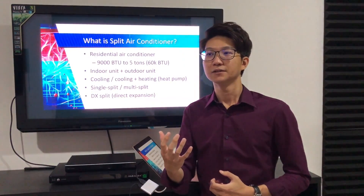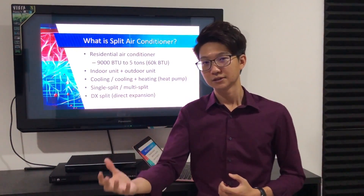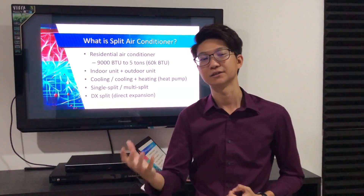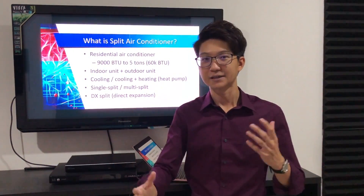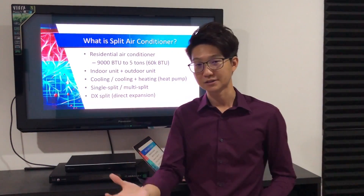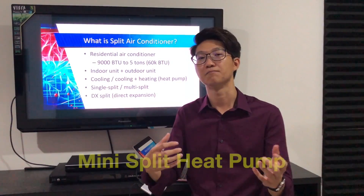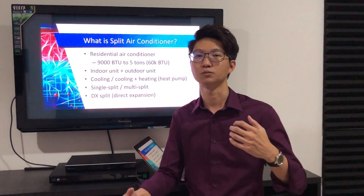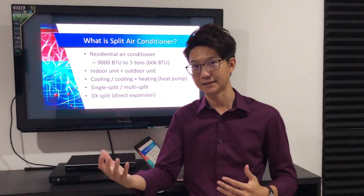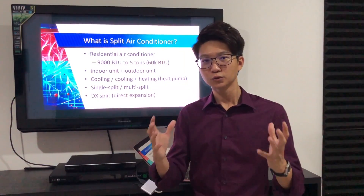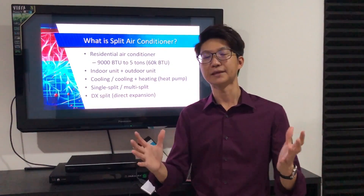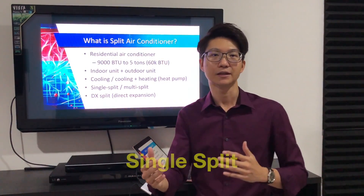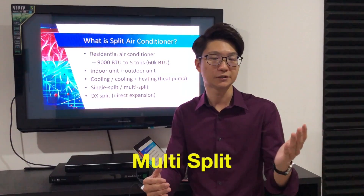Split air conditioners in certain countries only do cooling — like Malaysia, Singapore. Other countries, like the United States, have what we call the mini-split heat pump, which can do both cooling and heating. There are two types of split air conditioner: one is the single split and the other is the multi-split.